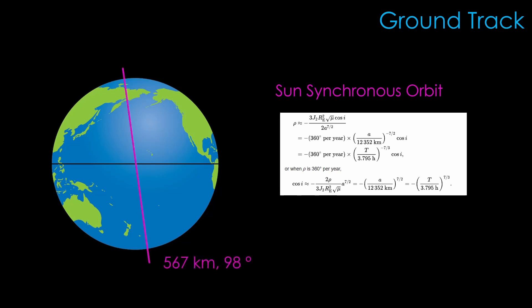The most popular sun-synchronous orbit is at 567 kilometers and an inclination of 98 degrees. It covers most of the Earth's surface, provides 15 orbits per day, and is high enough that the satellite will last in orbit for a long time.